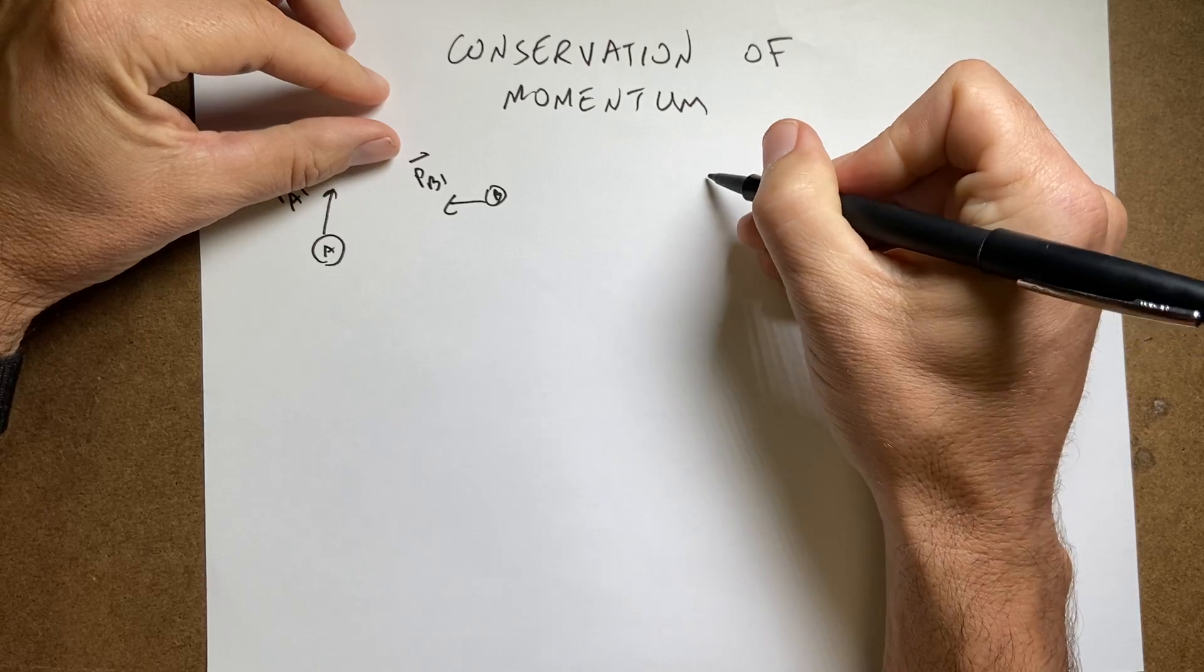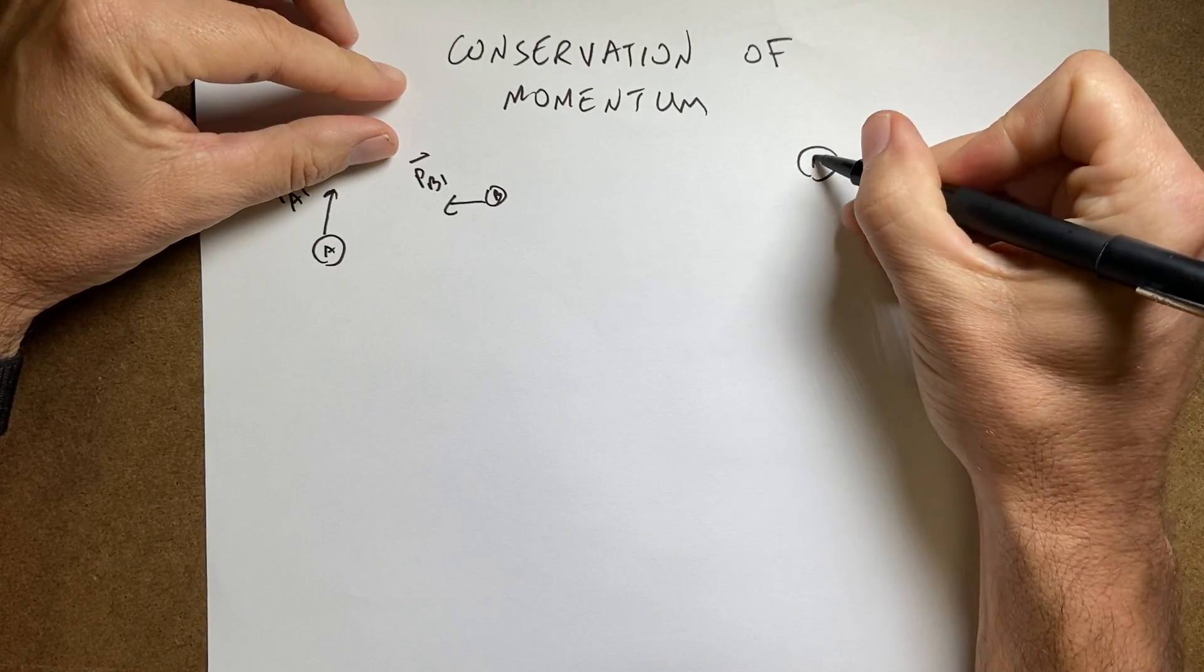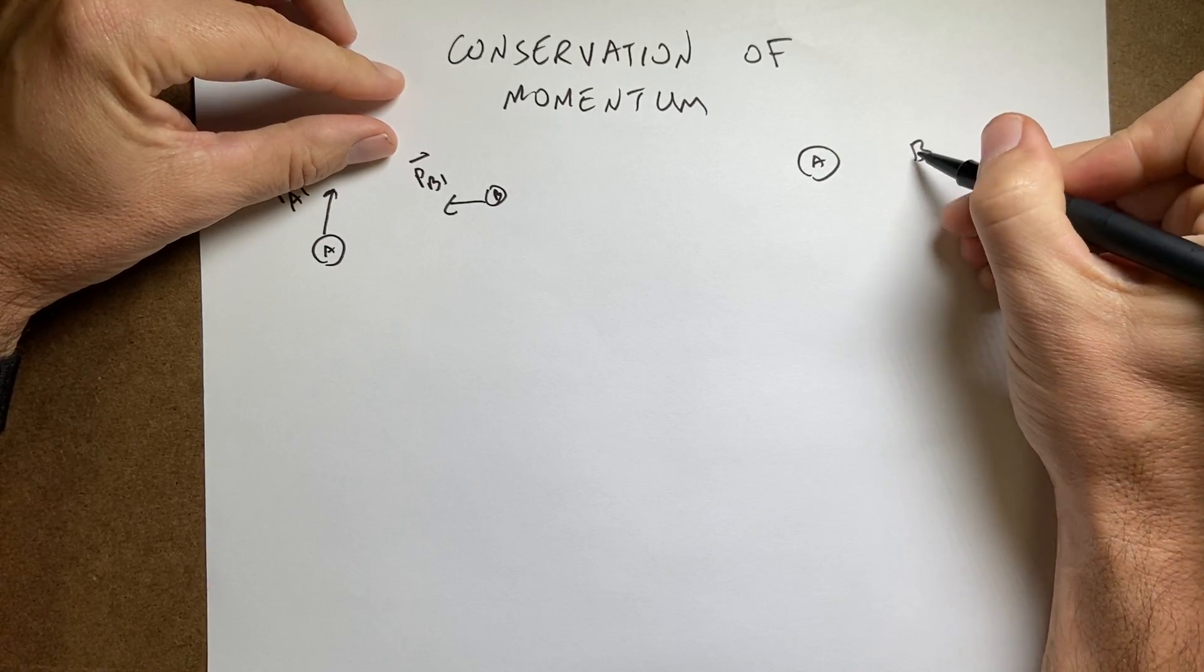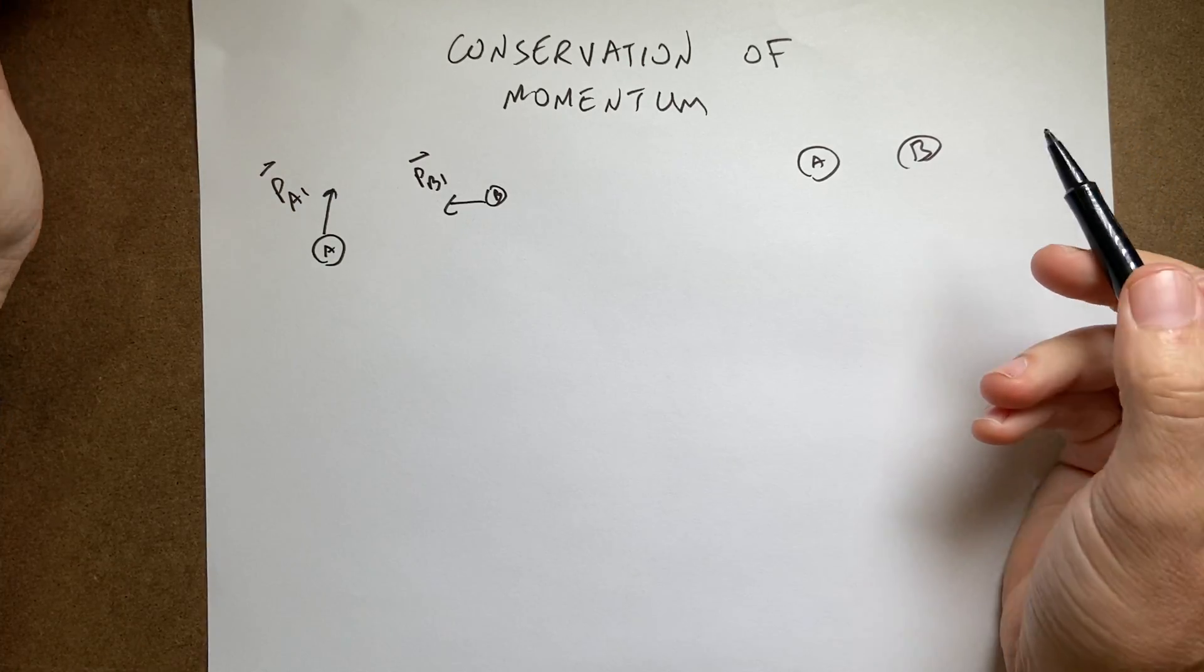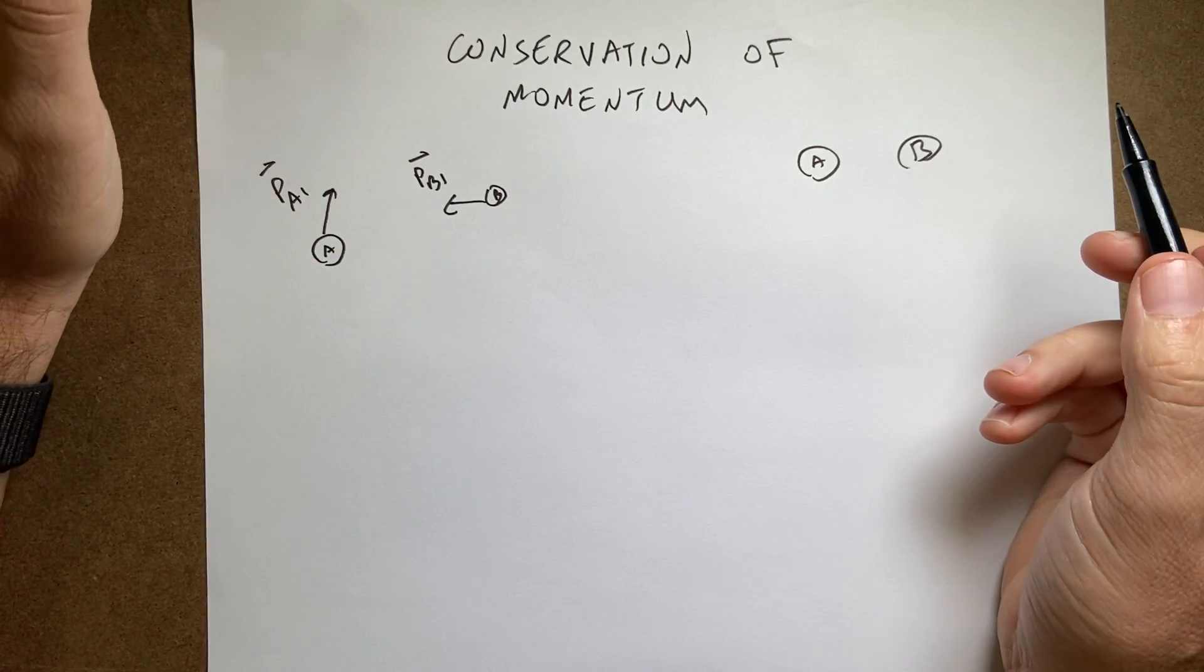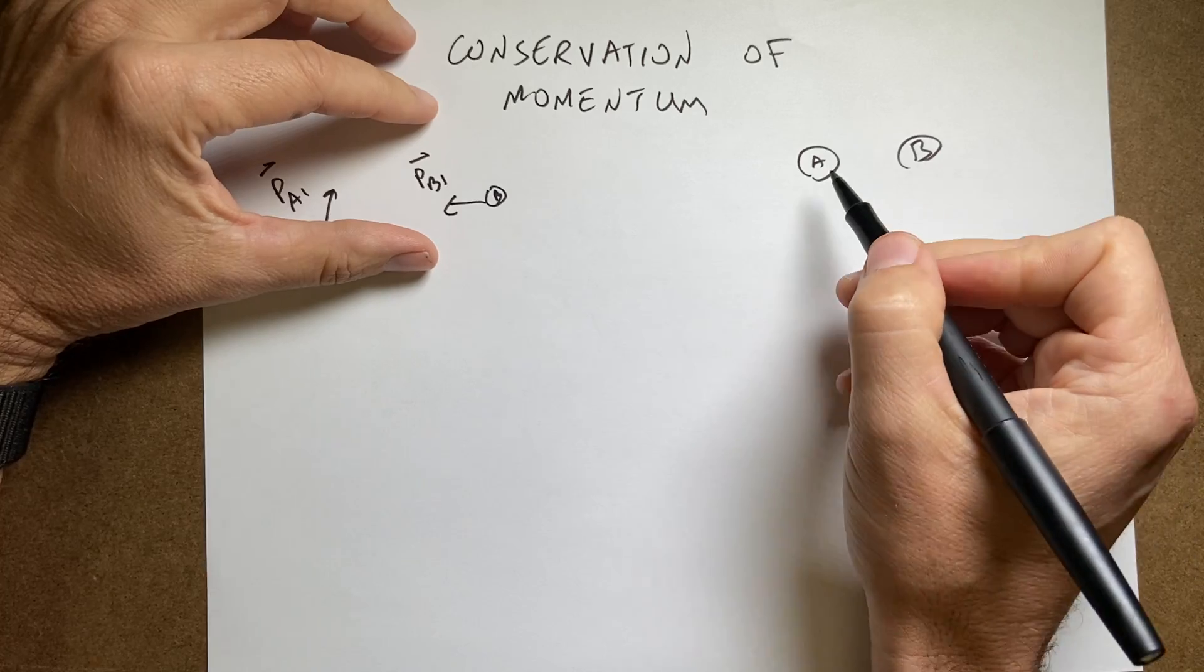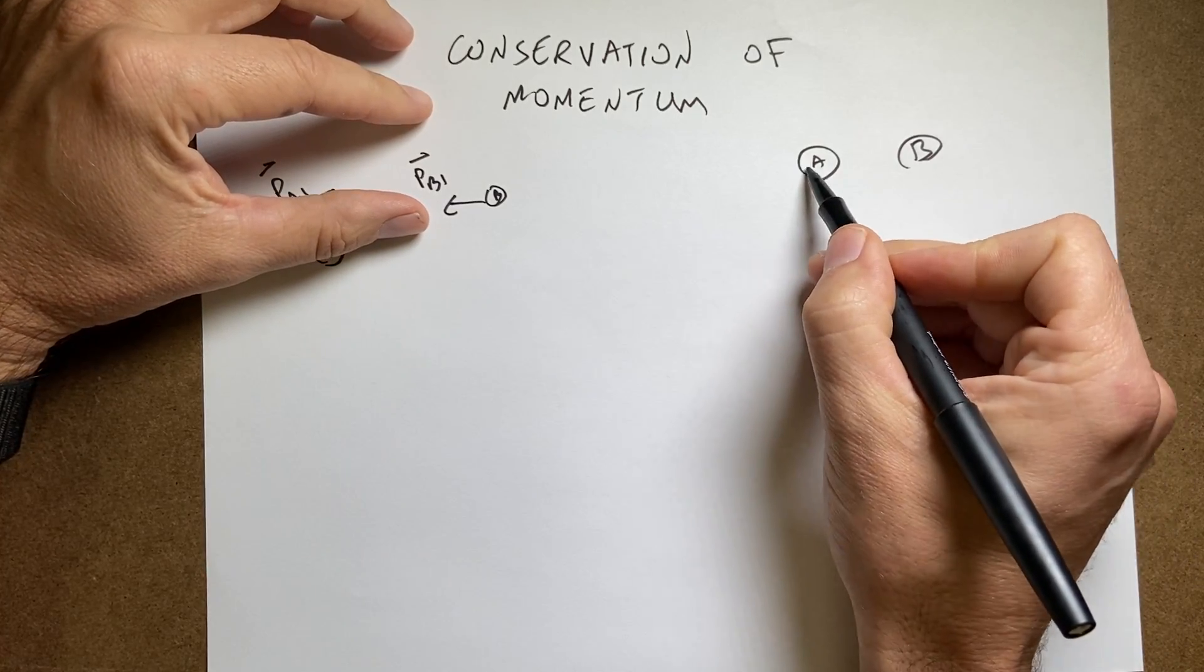So, the third law says that if I have two objects interacting, here's a different picture of object A and object B. Let's say there's an electric repulsive force between them, or maybe they're colliding, or maybe there's a gravitational force, it doesn't matter. If those two objects are interacting,